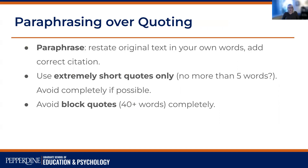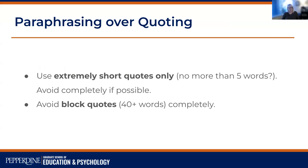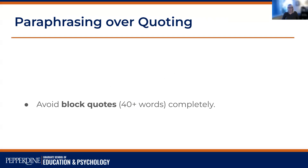In terms of paraphrasing versus quoting, a paraphrase is where you integrate research by restating original text in your own words and adding the correct citation. In general, it's preferred at the graduate level that you paraphrase. If you include quotations, a suggestion would be to have no more than five words strung together in a quotation. Try to avoid quotations as much as you can and really rely on paraphrasing, because it gives you more flexibility to compare, contrast, summarize, and synthesize. Generally at the master's level, you will avoid block quotes of 40 or more words completely.